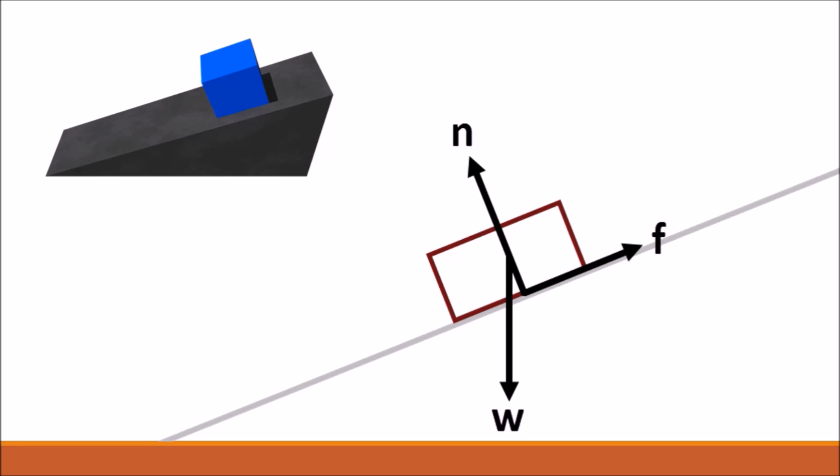It has the same downward weight force W. But the normal force N is now slanted away from the vertical. Normal forces always act at right angles to the surface. There is also an added frictional force which opposes the sliding motion. It points up the slope.